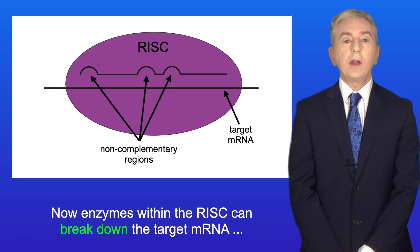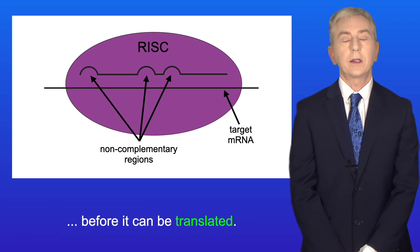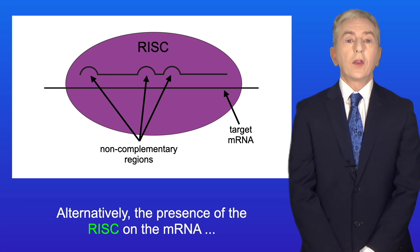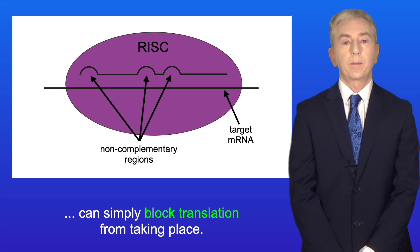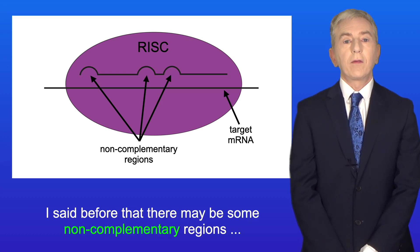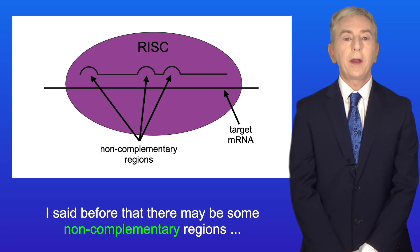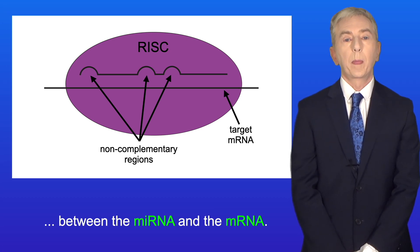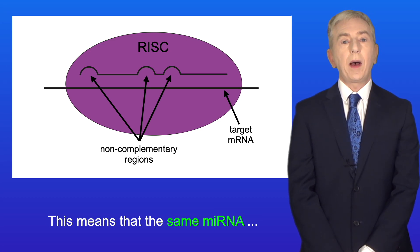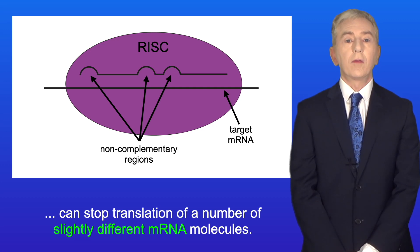Now, enzymes within the RISC can break down the target mRNA before it can be translated. Alternatively, the presence of the RISC on the mRNA can simply block translation from taking place. Now, I said before that there may be some non-complementary regions between the miRNA and the mRNA. This means that the same miRNA can stop translation of a number of slightly different mRNA molecules.